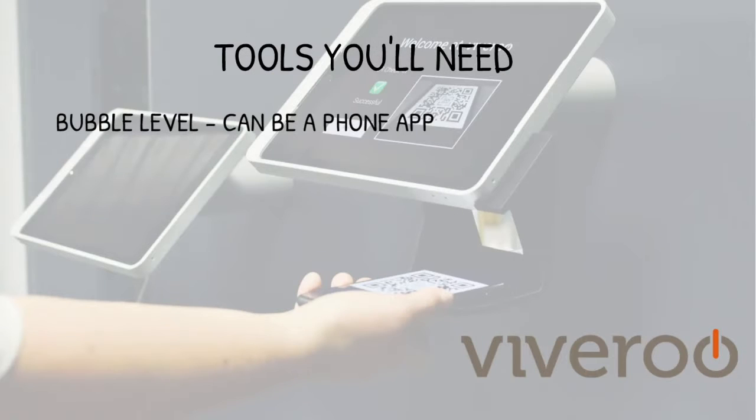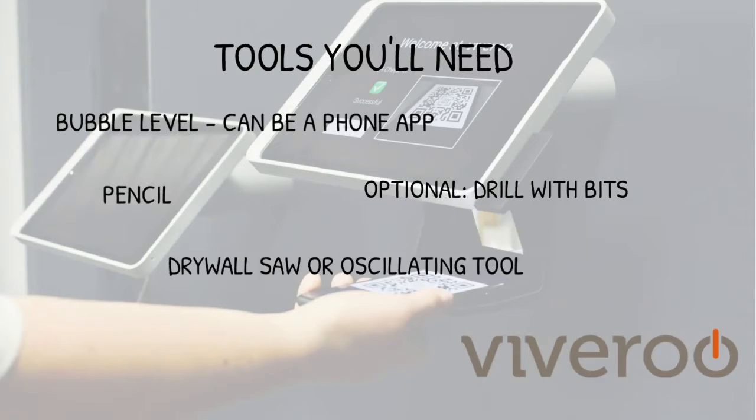For this install you'll need a bubble level, but you can use an app on your phone, a pencil for marking, a screwdriver, a drywall saw or oscillating tool, and the option for a drill with bits.